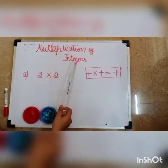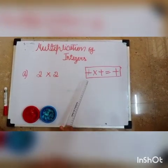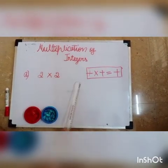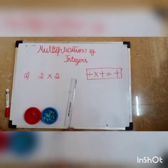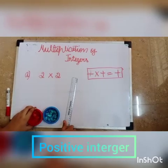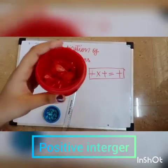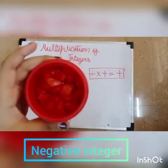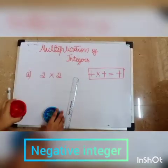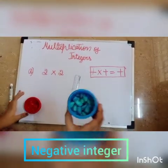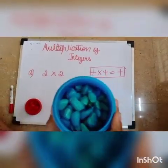In the topic multiplication of integers, we are going to see an activity. I have taken red stones for positive integers and blue stones for negative.